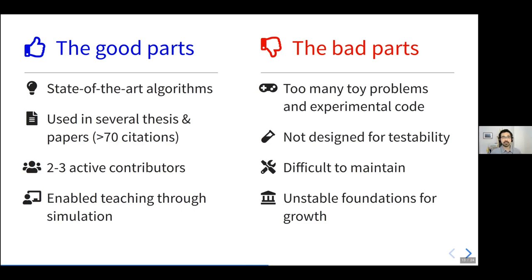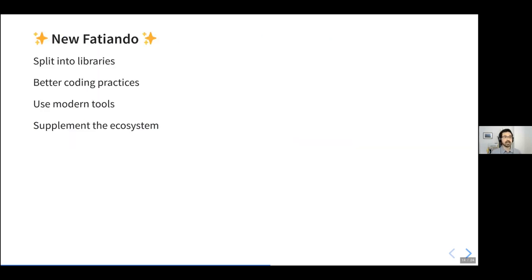But there were also quite a few bad parts. Mostly there were way too many toy problems and experimental code that didn't really go anywhere and we weren't actively maintaining. The code was also not designed for testability — meaning being able to have automated unit tests so that you could quickly verify if the software still works. Because of this it was very difficult to maintain; we could easily make changes in one part of the code that broke the rest without realizing it until someone complained. All of this made for very unstable foundations for the growth of the project.